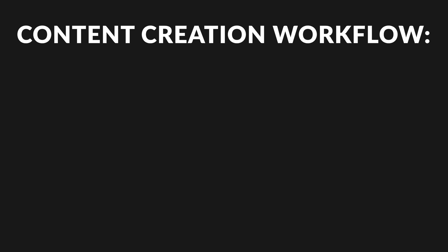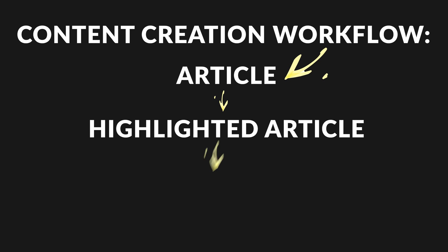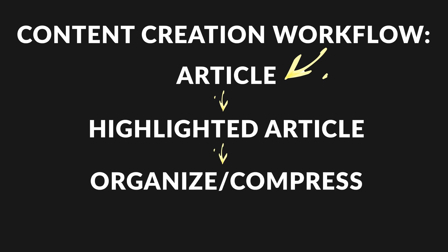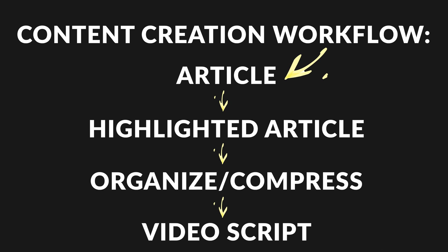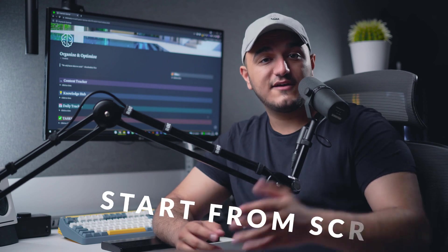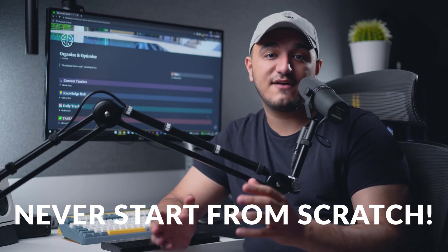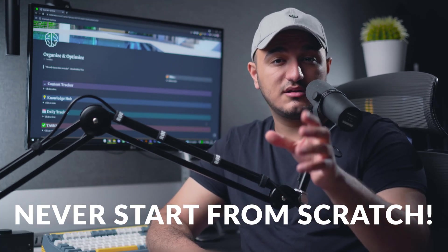The knowledge hub lets you put information out of your head and into your second brain, and then interact with it whenever you want. It integrates with every single part of our system — you can see exactly when you captured something, why you captured it, and how it might relate to some output you want to create. For example, if you're a YouTuber, you can read an article, bring it into your knowledge hub, organize it, write your thoughts, and connect it directly to the video you want to produce.